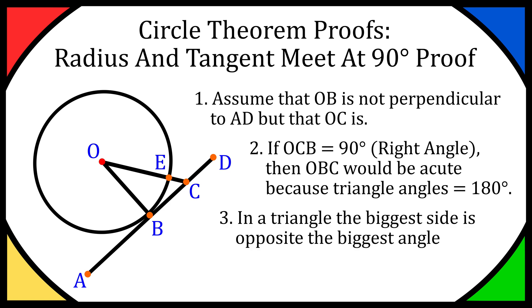In a triangle, the biggest side is opposite the biggest angle. So if OCB is the biggest angle, the biggest side will be OB. Therefore OB is bigger than OC — which we can obviously see is wrong, but let's keep going with the theorem.